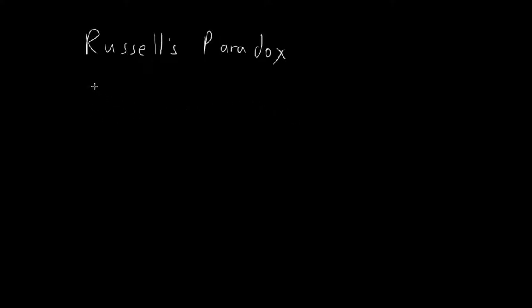In this video, I will introduce Russell's paradox. In the last video, we talked about set builder notation. We used the notation x given p of x to describe a set containing all objects x for which p of x is true. However, it is possible to set p of x in such a way that it leads to a logical contradiction. So that's what I'm going to show you in this video.